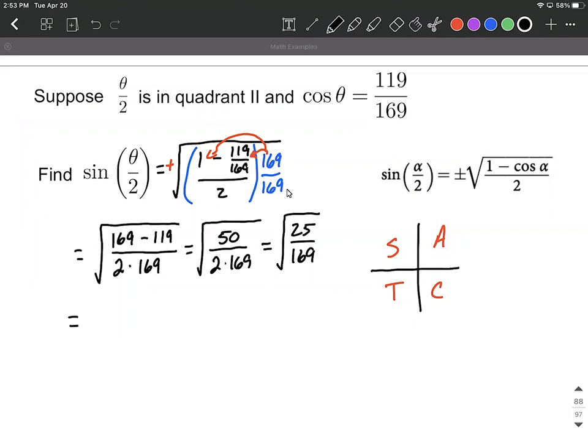From here, we're allowed to use our radical rules and put a square root with each of the numerator and the denominator, and then take the square root of 25, which is 5, and the square root of 169, which works out to be 13. We've got a pretty nice answer.